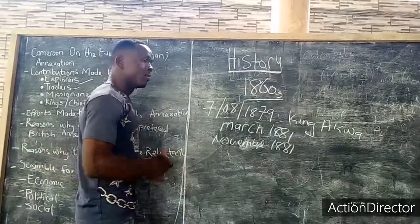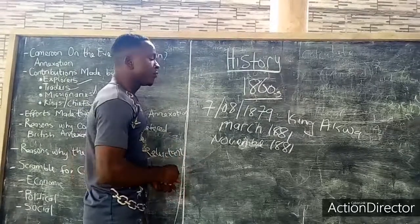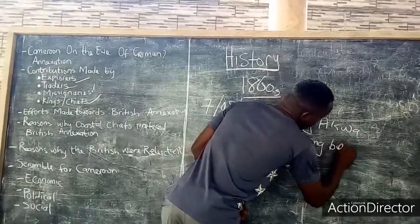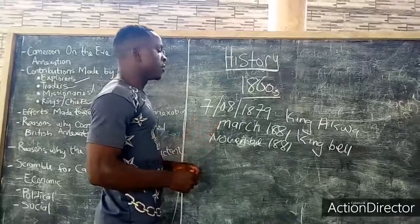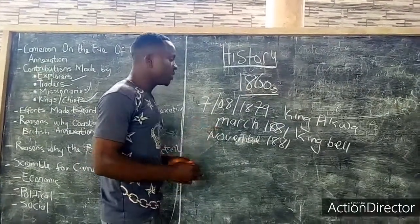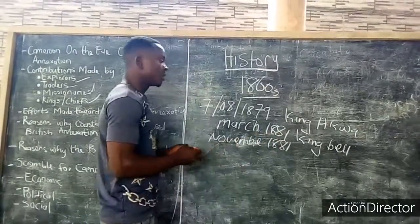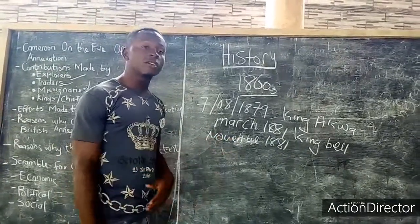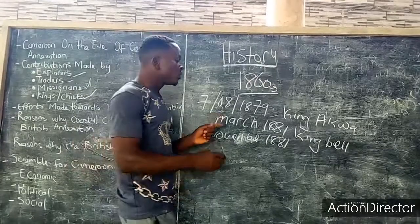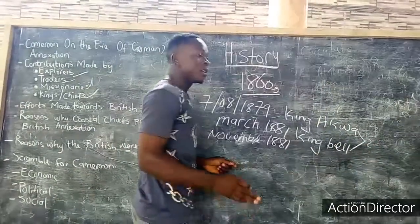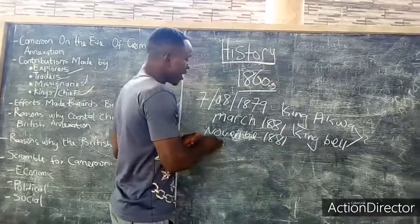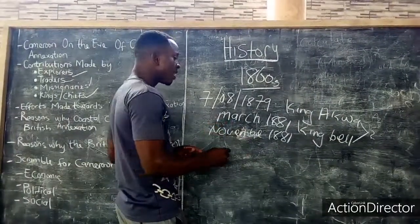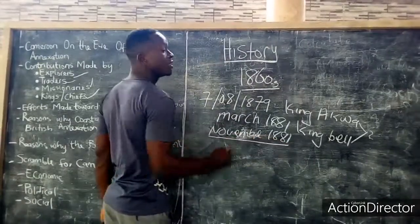The second effort made by the Cameroon coastal chiefs was made by King Bell. King Bell wrote the second letter in March 1881. When it was written, the British government still did not have interest in the annexation of Cameroon. For that reason, both King Aqua and King Bell jointly wrote what is known as the Jairus Madame letter. That Jairus Madame letter was written in November 1881.